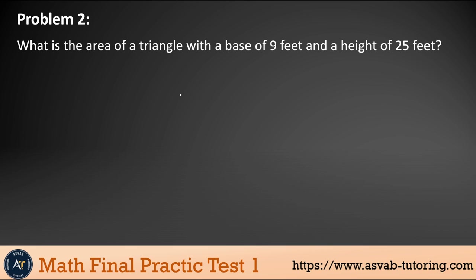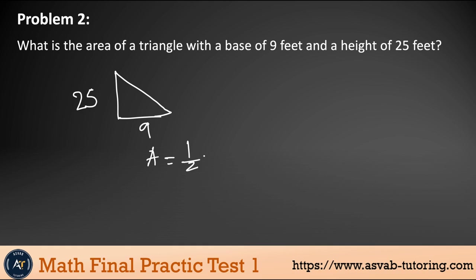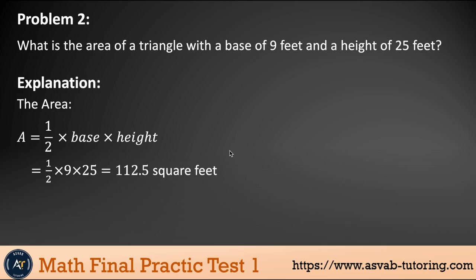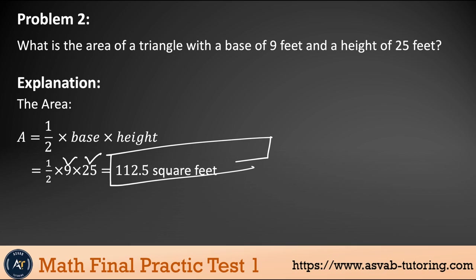Problem 2: What is the area of a triangle with a base of nine and a height of 25? Whenever you have a geometric figure, try to draw it — it makes the problem much easier. The area of a triangle is one-half times base times height. So: ½ × 9 × 25 = 225 ÷ 2 = 112.5 square feet.